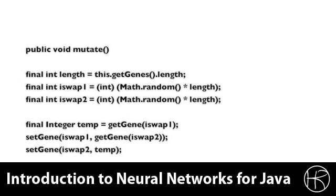Mutation is another important function that must be implemented for a genetic algorithm. Here we see how mutation is done for the traveling salesman problem. First we get the length — the total number of genes or cities to visit. Then we create two swap points, swap 1 and swap 2, which can be anywhere in the list of cities. We create a temporary city to perform the swap: move one city into temp, copy the other city over, then restore temp to the other city. This effectively swaps the two cities — we just randomly swap two cities at points inside the list.